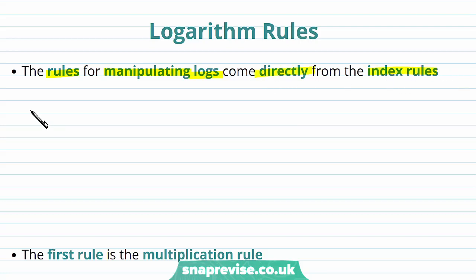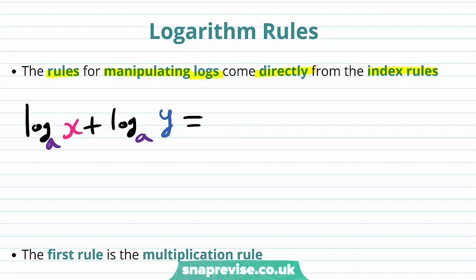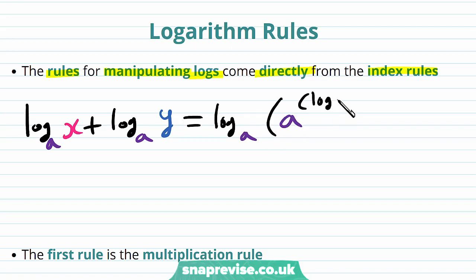So what exactly are the logarithm rules? The rules for manipulating logarithms come directly from the index rules. Namely, if we consider the log base a of x plus the log base a of y, then we can write this as the log base a of a to the power of the log base a of x, plus the log base a of y. All we have done is to use the fact that log base a and a to the power of are inverse functions, so applying one after the other will cancel out their effect. So all we get is the log base a of x plus the log base a of y, which is what we had before.